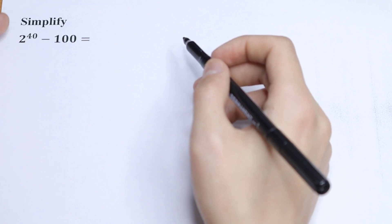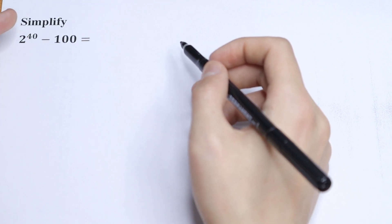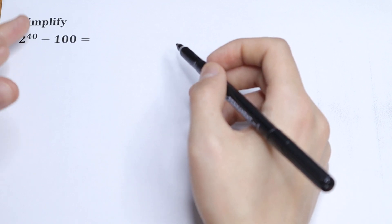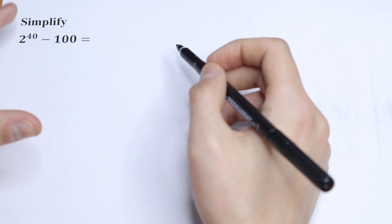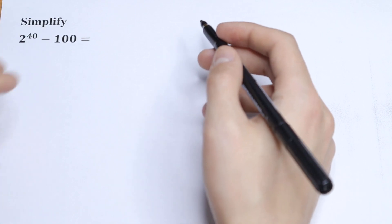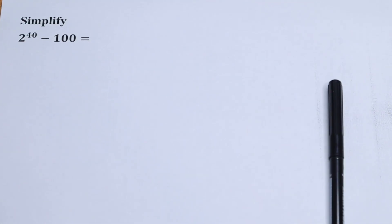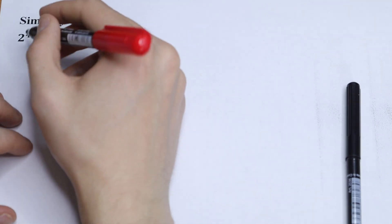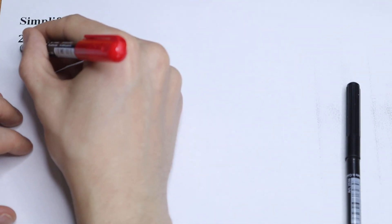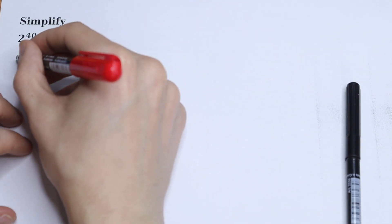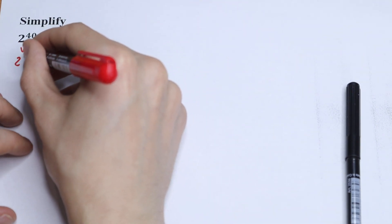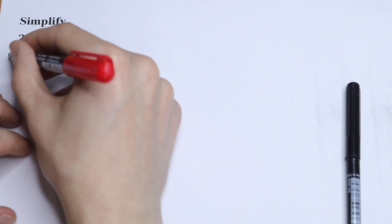On the first look, this question is really hard, because we have 2 to the 40th power, which is a really huge number. But I want to suggest a really good method to solve it. Let's write 2 to the 40th power as 2 to the 20th power, squared.